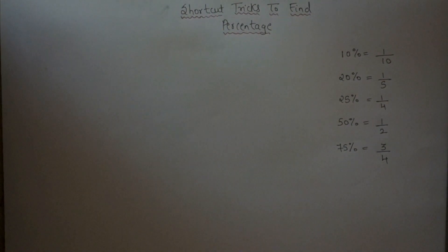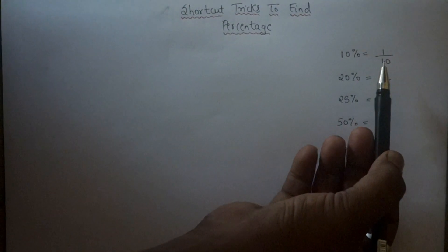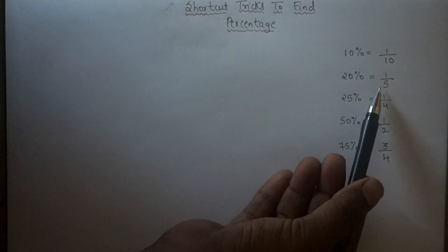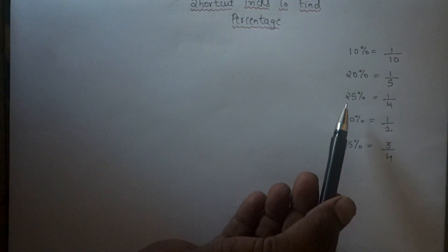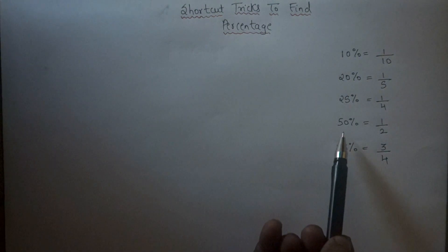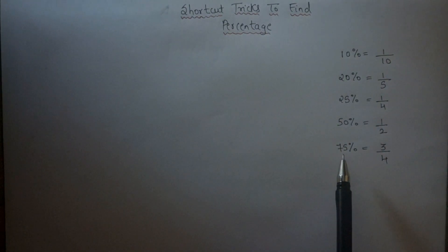Good morning everyone! In this video we will see shortcut tricks to find the percentage. Whenever you find 10% of any number, simply multiply that number by 1 upon 10. For 20%, multiply by 1 upon 5. For 25%, multiply by 1 upon 4. For 50%, multiply by 1 upon 2. For 75%, multiply by 3 upon 4.